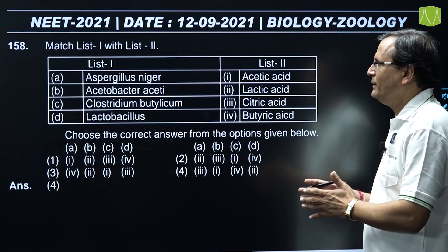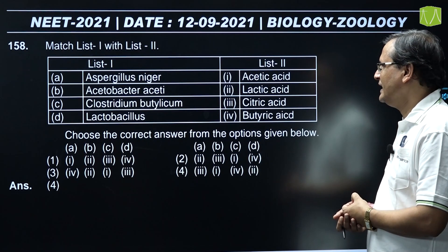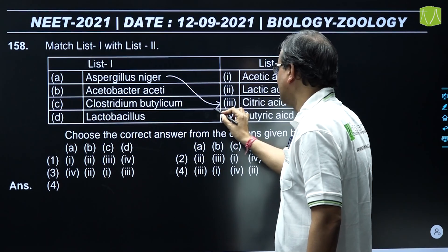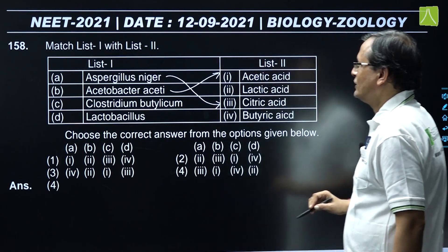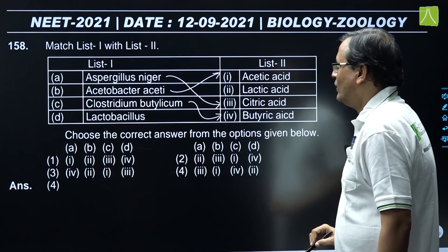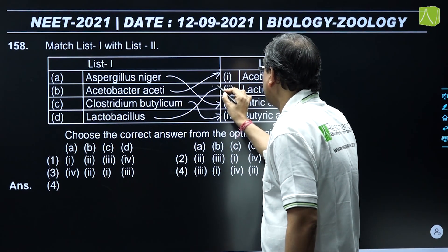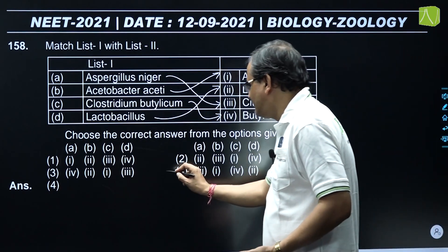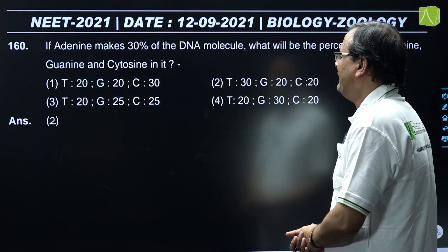Question 158: Match list first with list second. Aspergillus niger - commercially citric acid is formed from it. Acetobacter aceti - acetic acid is produced from it. Clostridium butylicum - butyric acid is formed from it. Lactobacillus - lactic acid is formed from it. Based on this analysis, the correct answer is option fourth.